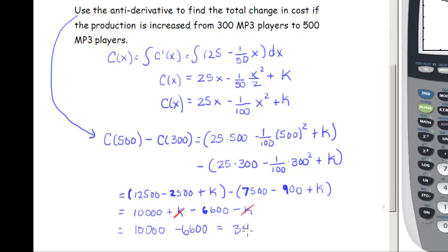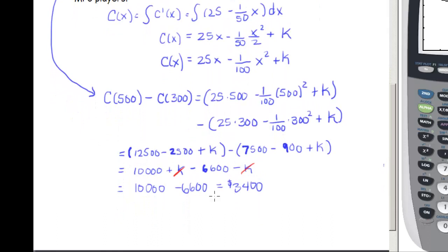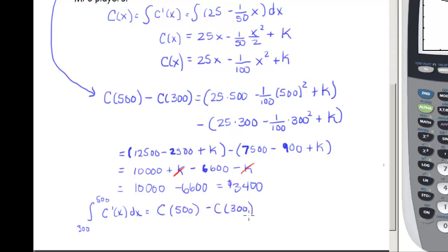This gives us the same $3,400 as the geometric method. The powerful insight is that to find the definite integral from 300 to 500 of c prime of x dx, all we need to do is find the anti-derivative and subtract the values at the two limits: c of 500 minus c of 300. That is our algebraic method — no Riemann sum, no triangles, rectangles, or trapezoids. Just find the anti-derivative and plug in the two limit values.